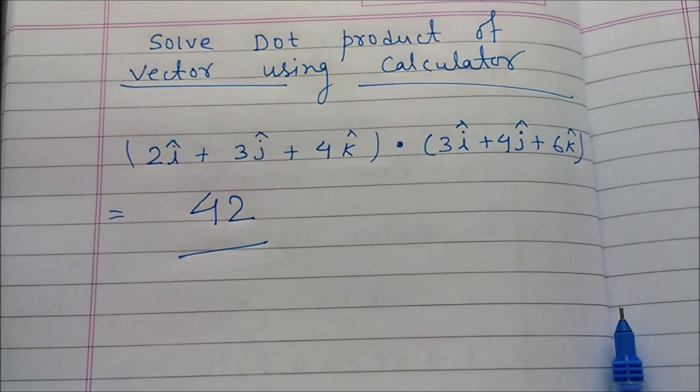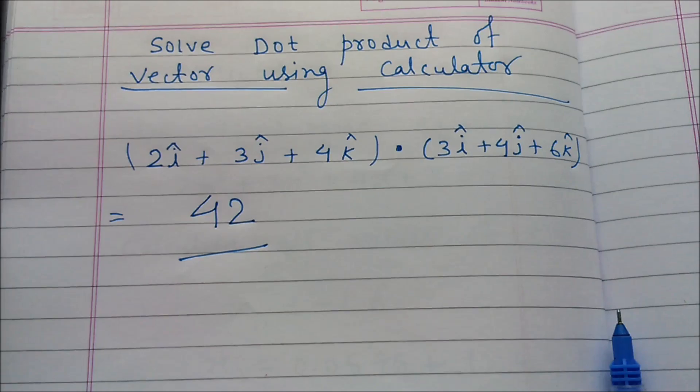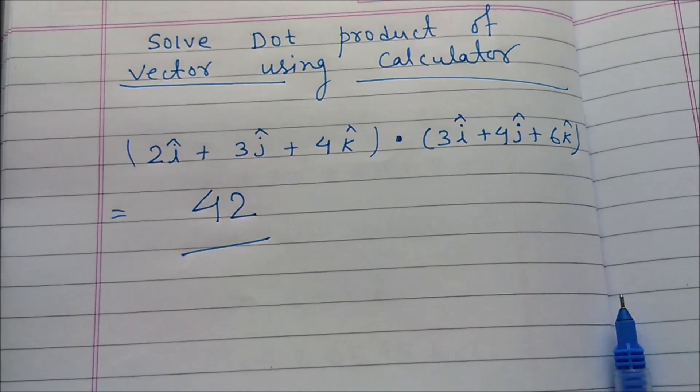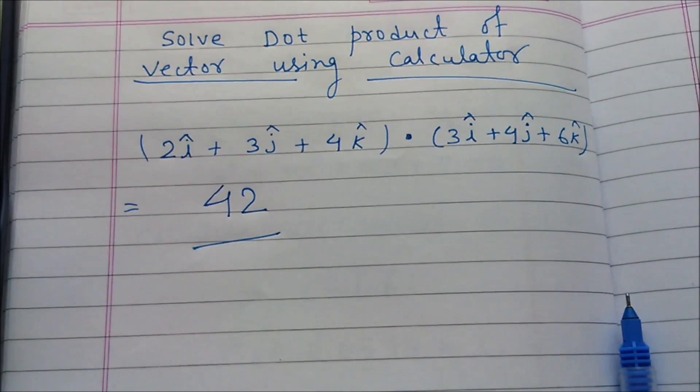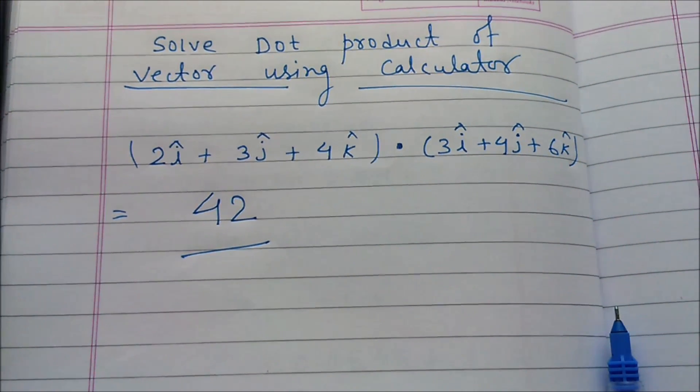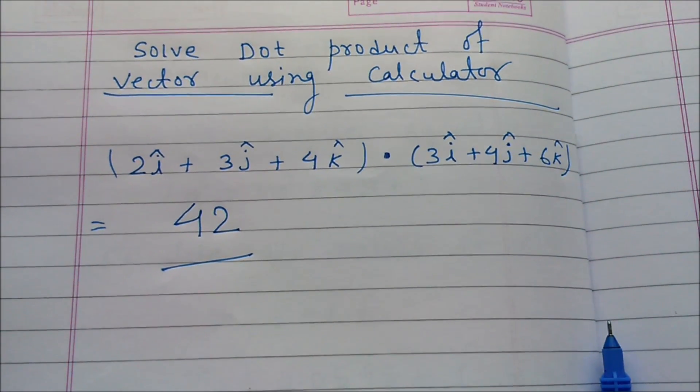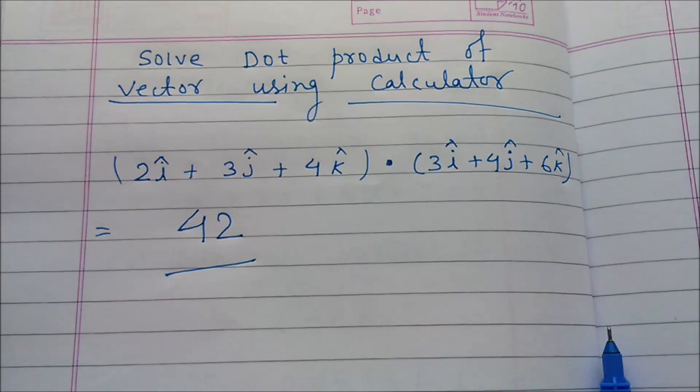So by using a calculator, you can easily calculate the dot product of two vectors. Thank you.